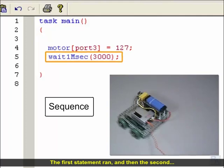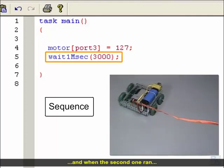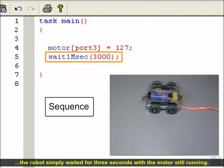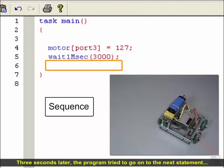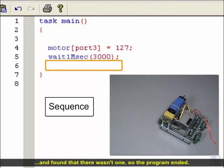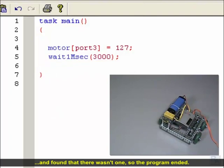The first statement ran, then the second, and when the second one ran, the robot simply waited for 3 seconds with the motor still running. 3 seconds later, the program tried to go on to the next statement, and found that there wasn't one. So the program ended.